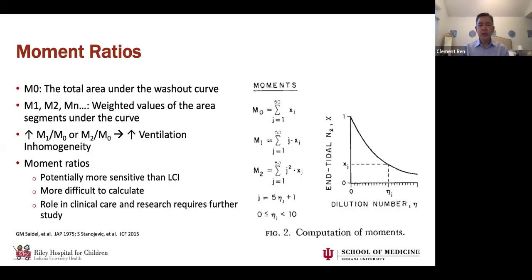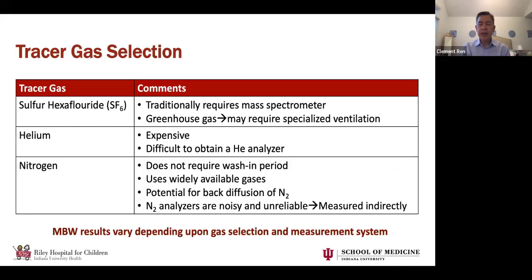So that covers the conceptual basis of MBW and LCI calculation. For practical considerations, one is what tracer gas to select. In general, there are three choices — SF6, helium, and nitrogen — each with advantages and disadvantages.